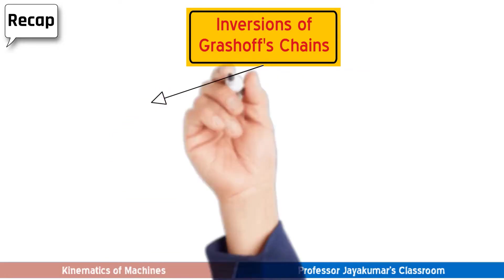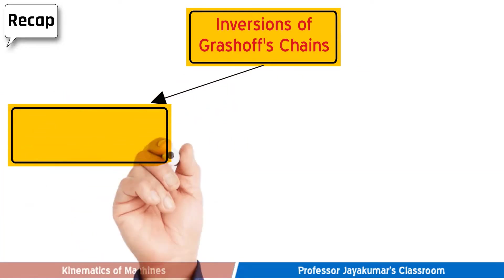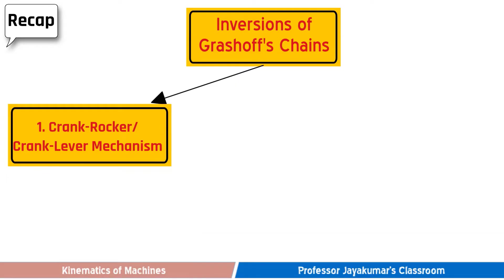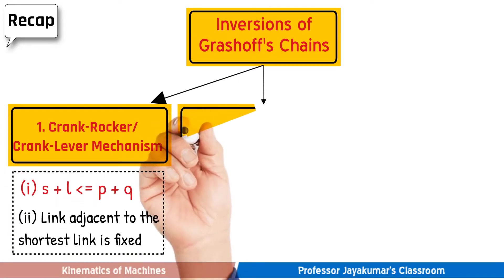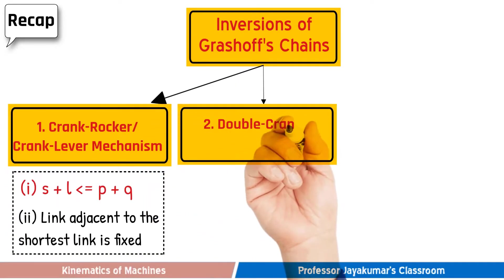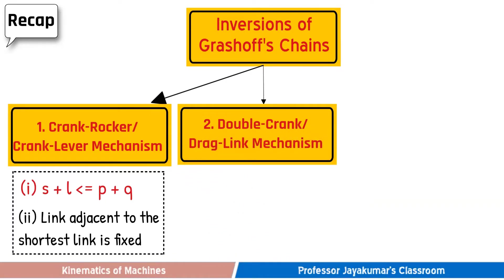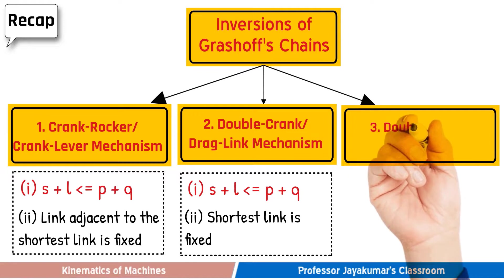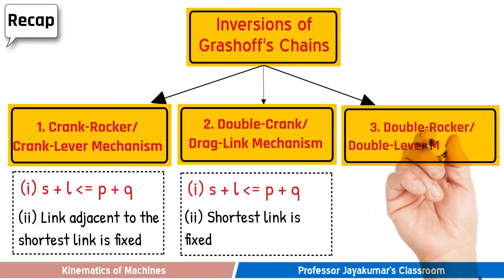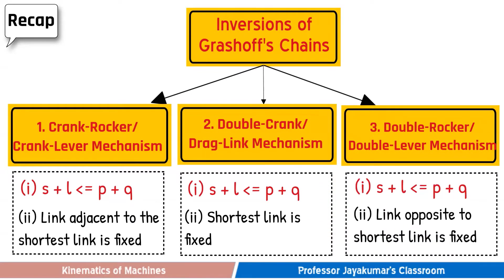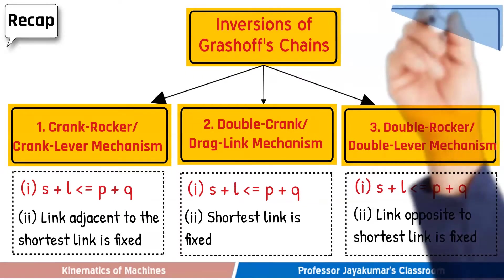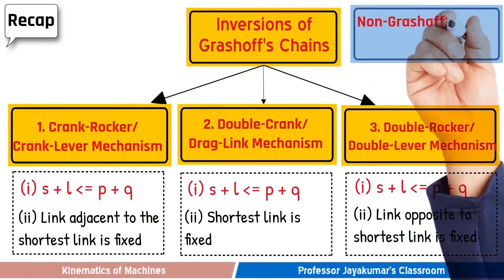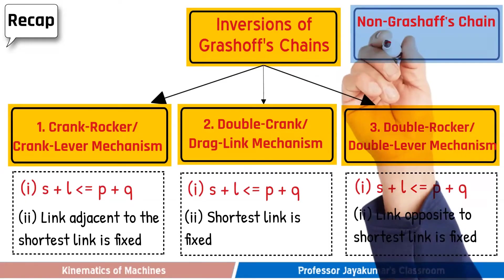Though theoretically 4 inversions are possible by a 4-bar chain, they will form only 3 distinct mechanisms: namely crank rocker mechanism, double crank mechanism, and double rocker mechanism, depending upon the link that is fixed. The various conditions to form those mechanisms are shown here.